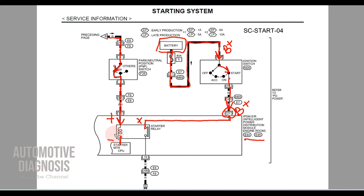I assume you guys know how to check a relay — if not, we have a video for checking different types of relays, link in the description. Right after providing battery positive and negative to the relay, the relay will be energized, creating an electromagnetic field. This electromagnetic field will close the starter relay switch. When this switch is closed, it provides battery positive from here to pin number 19, which is the output of the starter relay going toward the starter solenoid.